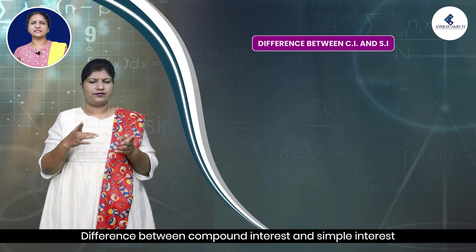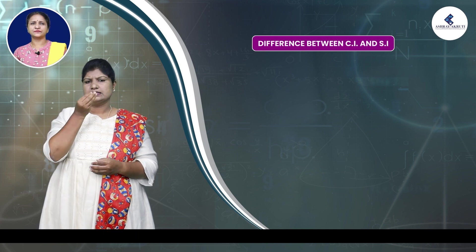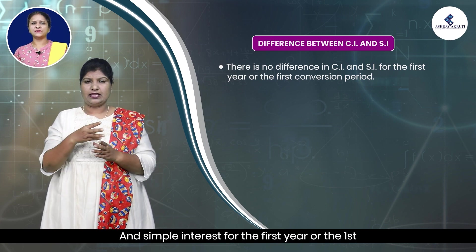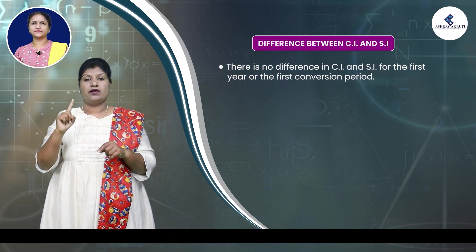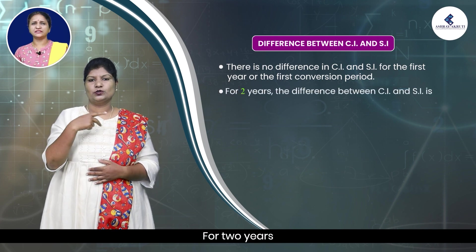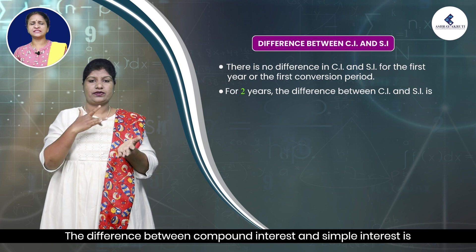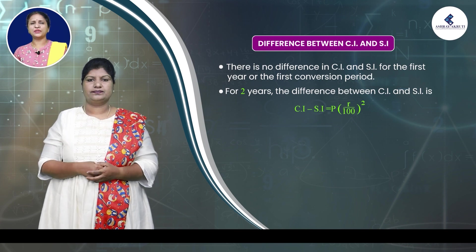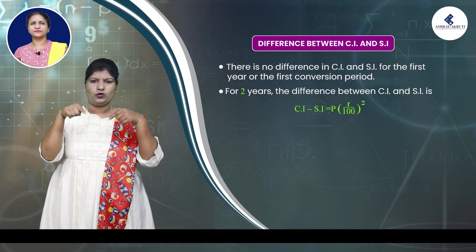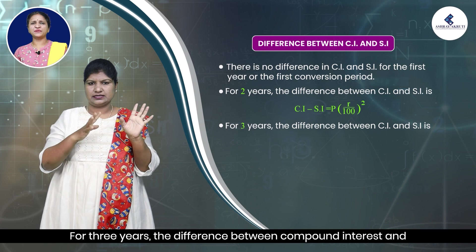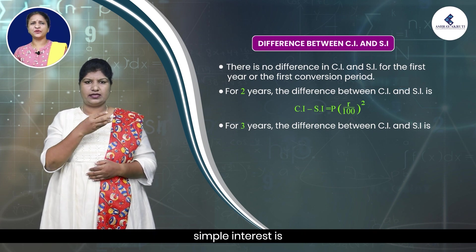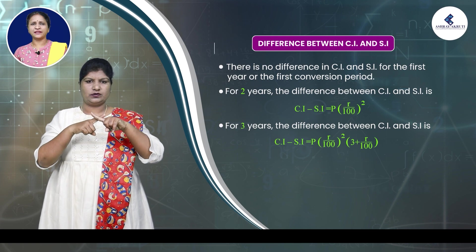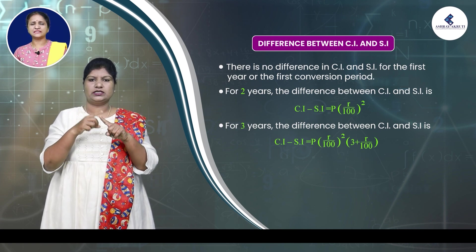Difference between compound interest and simple interest. There is no difference between compound interest and simple interest for the first year or the first conversion period. For 2 years, CI − SI = P × (R/100)^2. For 3 years, CI − SI = P × (R/100)^2 × (3 + R/100).